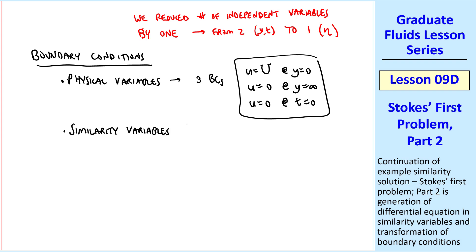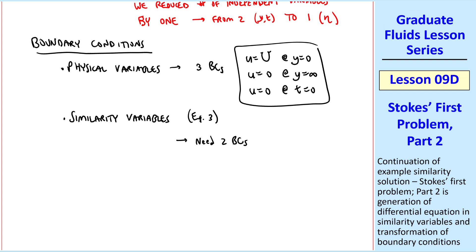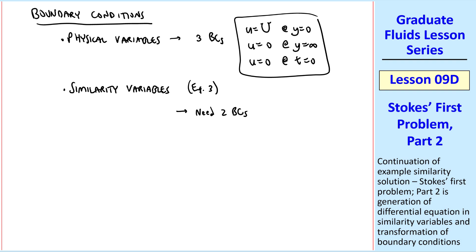Now in similarity variables, from equation 3, we need only two boundary conditions, as BJ noticed, since it's a second order ODE. This is where the similarity argument can break down.